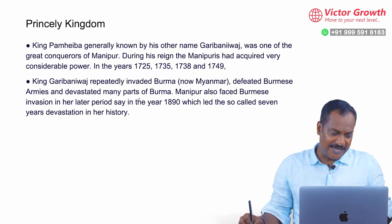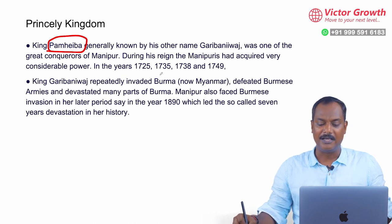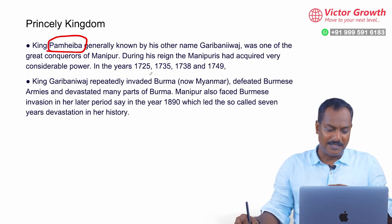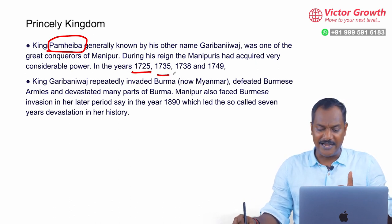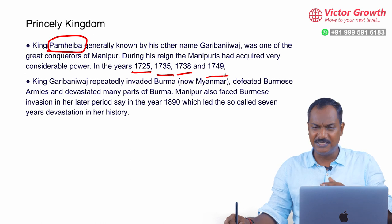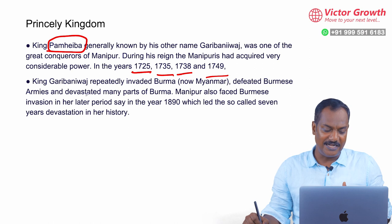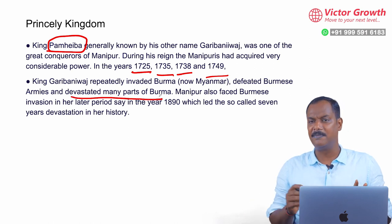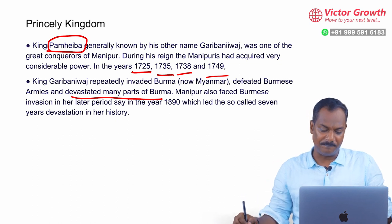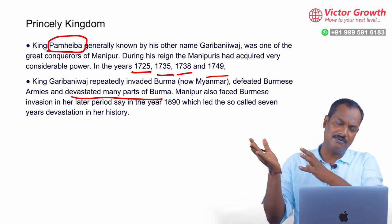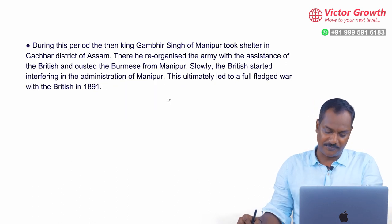If you look at the princely states, there was a king called Pamheiba who controlled the entire Manipur and had considerable power. They had devastated many parts of Burma, going to war and taking spoils from Burma. The Burmese kingdoms also came and attacked Manipur occasionally.